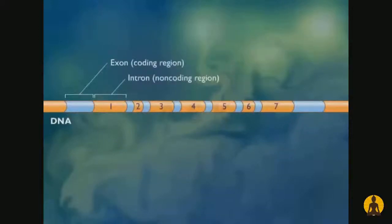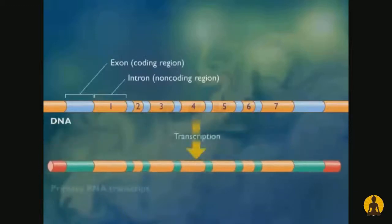The initial messenger RNA molecule or primary transcript copied from a gene by RNA polymerase is a faithful copy of the entire gene including introns as well as exons.